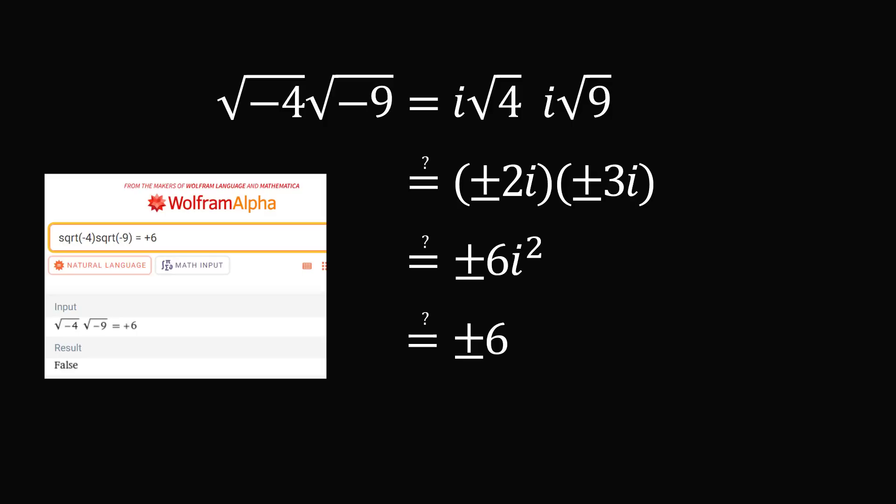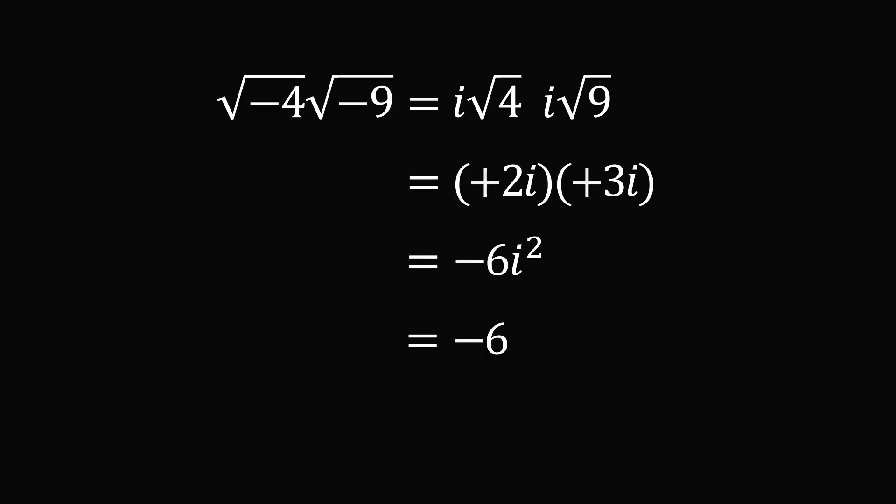But if you put this into Wolfram Alpha and say, is this result equal to plus 6, it just gives you the output that this is false. So it's taking the principal value of the square root, and it's saying it's not equal to +6, it will only be equal to -6. So I believe this question simplifies to be equal to -6, and that's the correct answer. But perhaps you have a different perspective, feel free to share in the comments.